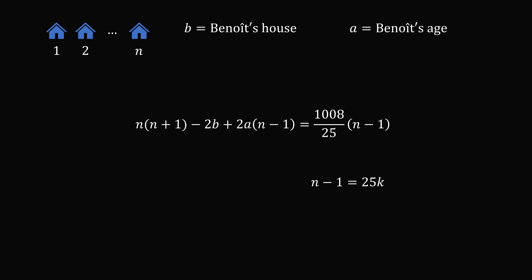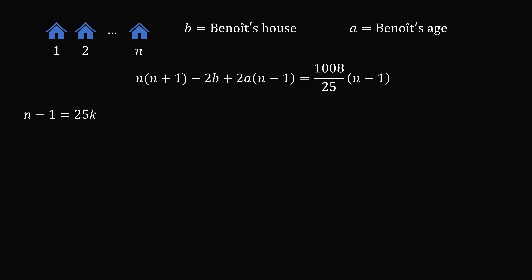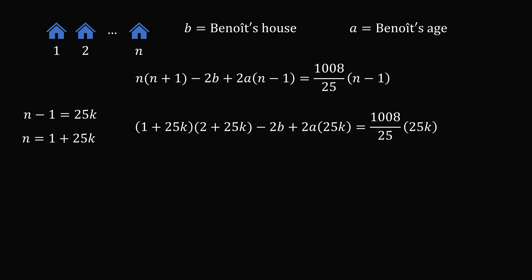We can write n minus 1 equals 25k, where k is some integer, which means n equals 1 plus 25k. Substituting into the equation and simplifying — the denominator 25 cancels with 25k — we then multiply through the binomial and group like terms.